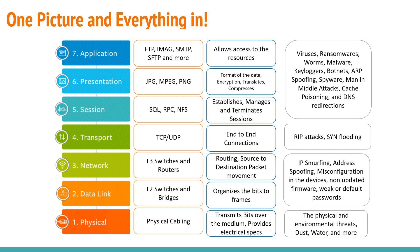For layers 2 and 3, multiple attacks are possible: address spoofing, IP smurfing, and misconfiguration. System administrators and provisioning staff must be extremely careful, as misconfiguration can lead to trouble. Firmware must be updated regularly — do not deny or delay updates from the manufacturer. Weak or default passwords are also a major concern and a key entry point for attackers.